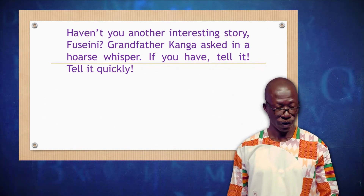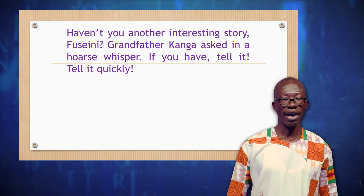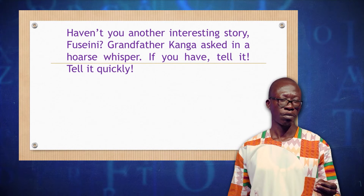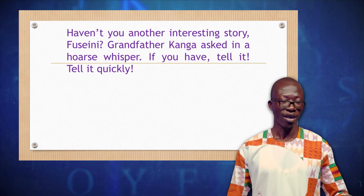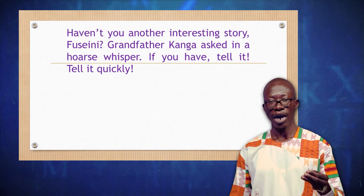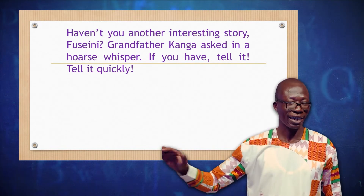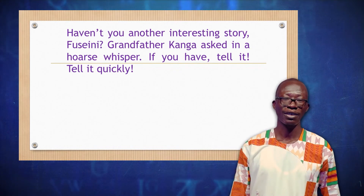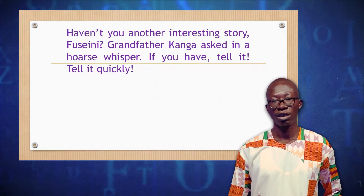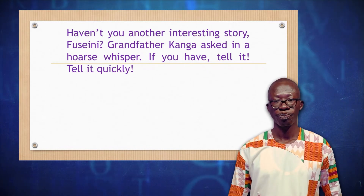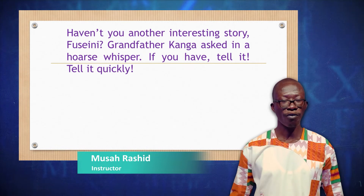Haven't you another interesting story, Fuseni? — that's a simple sentence: one independent clause. Then the next sentence: Grandfather Kanga asked in a hushed whisper — it's also made of only one clause, one independent clause. Grandfather Kanga being the subject, 'asked' being our verb — subject-verb relationship. In a hushed whisper is additional information. So Grandfather Kanga asked in a hushed whisper is an independent clause — one clause — and therefore it's a simple sentence.